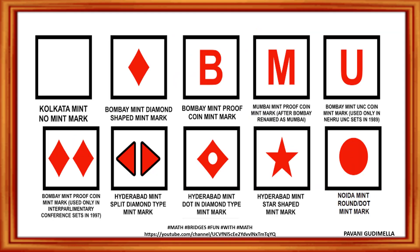As a recap: if there is no mint mark, the coin is from Kolkata, since it is the oldest mint and does not need a mark. A diamond, B, M, U, or double diamond all belong to Mumbai mint. A split diamond, a diamond with a dot inside, and a star all indicate Hyderabad mint. And a single dot indicates Noida mint.